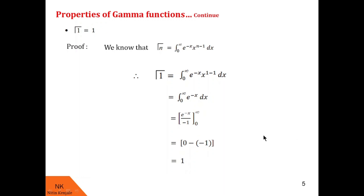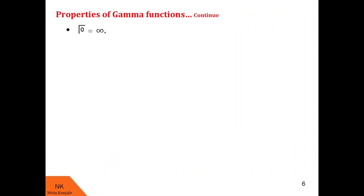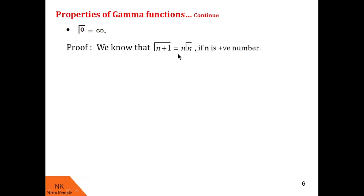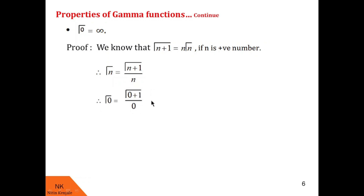Now let me show you how to find gamma of 0. Instead of using the integral definition, I will use Property 1, which says gamma of n plus 1 equals n into gamma of n. Rearranging, gamma of n equals gamma of n plus 1 upon n. To find gamma of 0, we put n equal to 0, giving gamma of 0 equals gamma of 1 upon 0. But gamma of 1 is 1, and 1 upon 0 is always infinity. So we get the property that gamma of 0 is infinity.